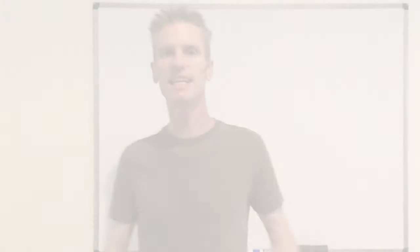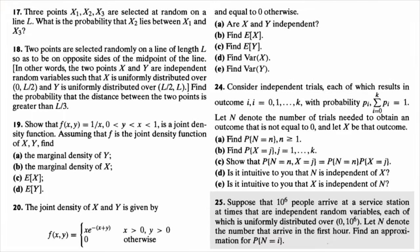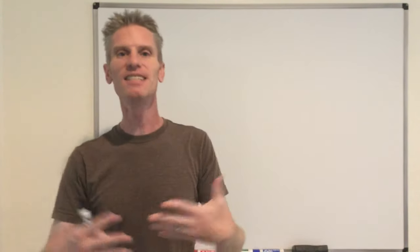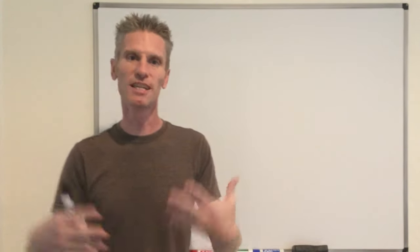Hi everyone. Welcome back to my YouTube videos. In this video, I'm going to solve exercise 6.25 of the textbook 'First Course in Probability.' We assume that 1 million people arrive at a service station at times that are independent uniform random variables in the interval [0, 1 million] hours. The goal is to find an approximation of the probability that N equals i, where N is the number of people who arrived in the first hour. This interesting problem mixes a bunch of important random variables we saw before.